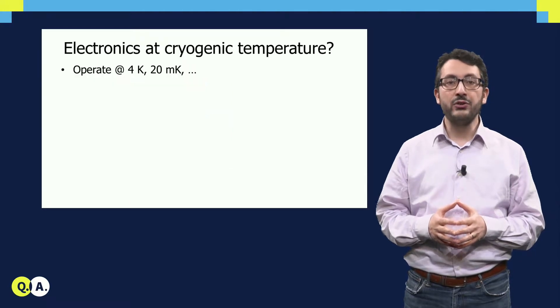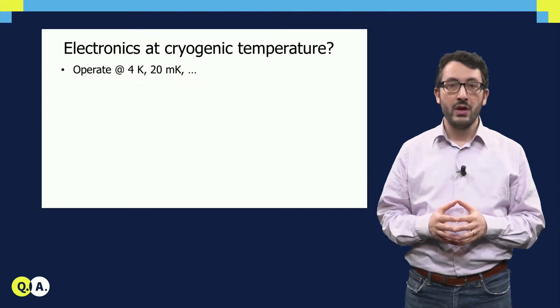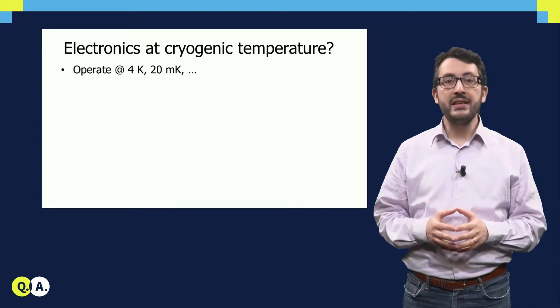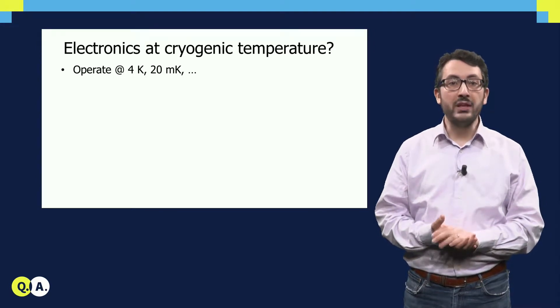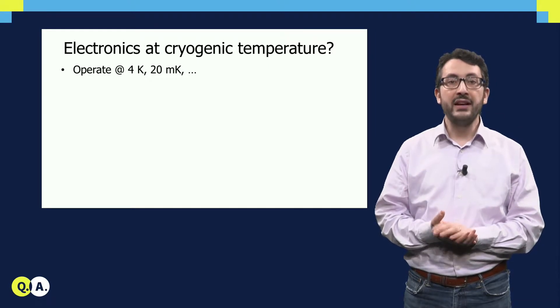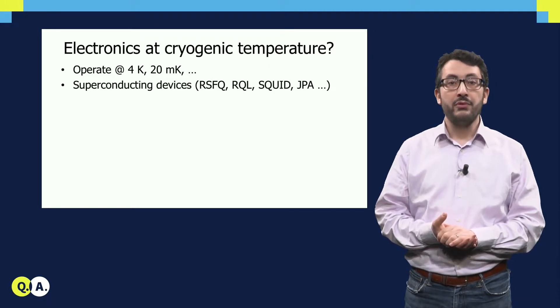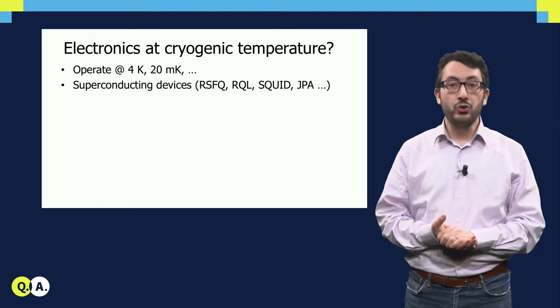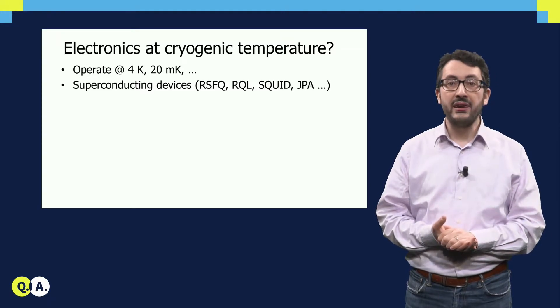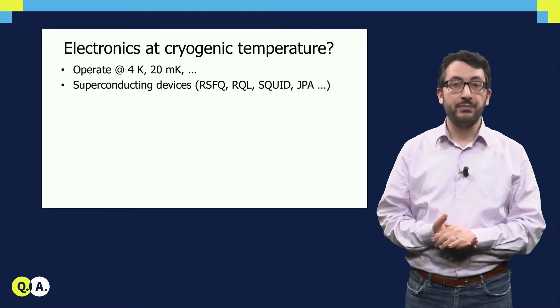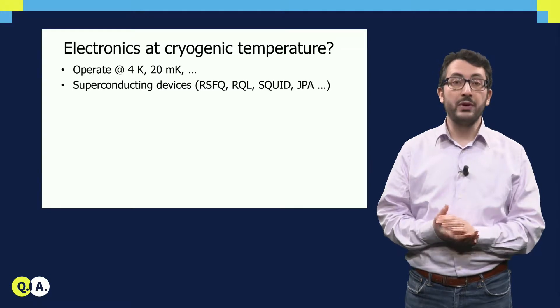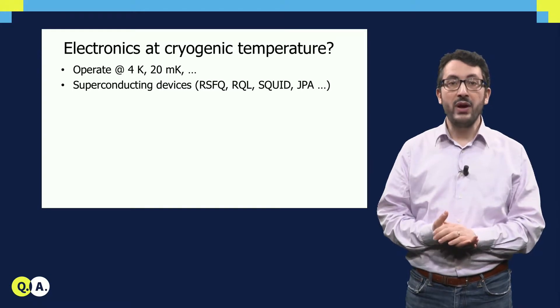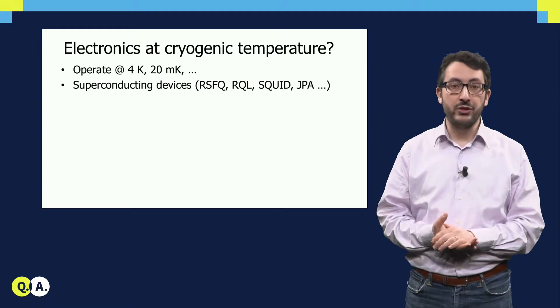Let's start from the cryogenic operation of the electronics. Which is the best electronic technology that can operate at 4K, at 20mK or even below? There are different options. First, we can think to use superconducting devices, like RFSQ, RQL and so on. These devices operate naturally at very cold temperature because they exploit superconductivity. And one additional advantage is that they have very low power dissipation.